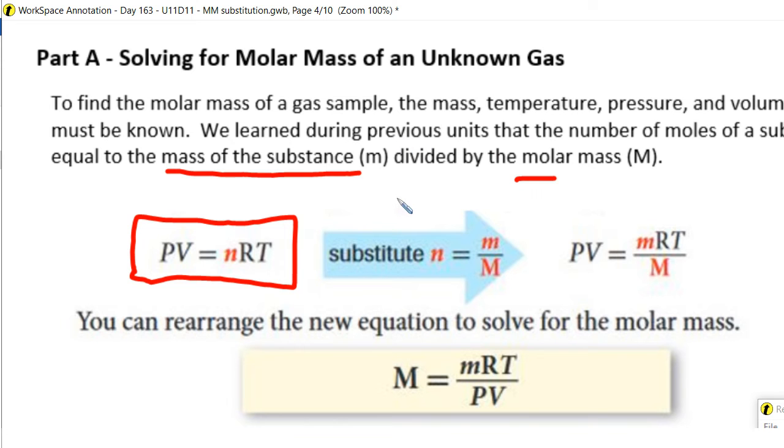So we learned back in the previous units that mass, how many grams you have of a substance divided by the molar mass, is equal to the number of moles. So if little n is equivalent to mass divided by molar mass, where we see number of moles in our equation,